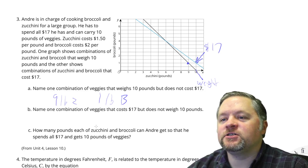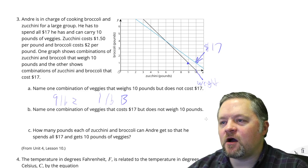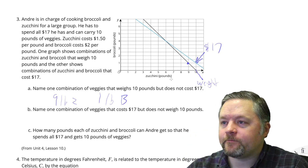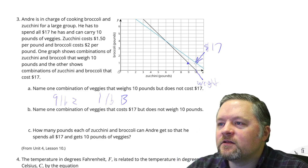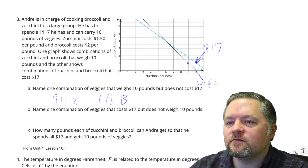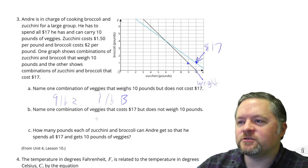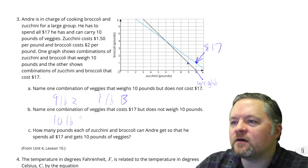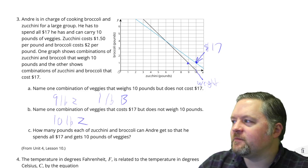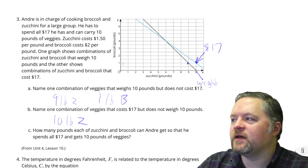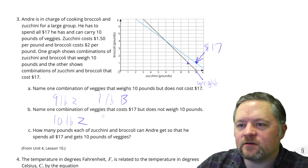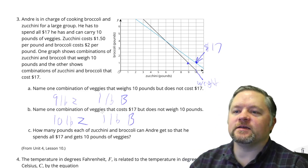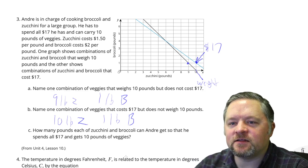Name one combination of veggies that costs $17.00 but does not weigh 10 pounds — something on the cost line. Let's go with this point: 10 pounds of zucchini and 1 pound of broccoli. That would be $17.00, but not 10 pounds — that's 11 pounds.